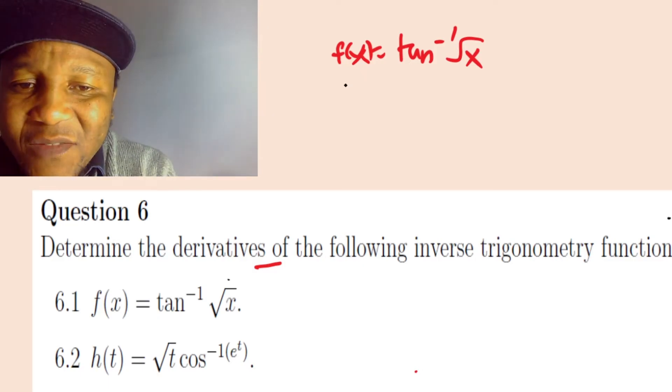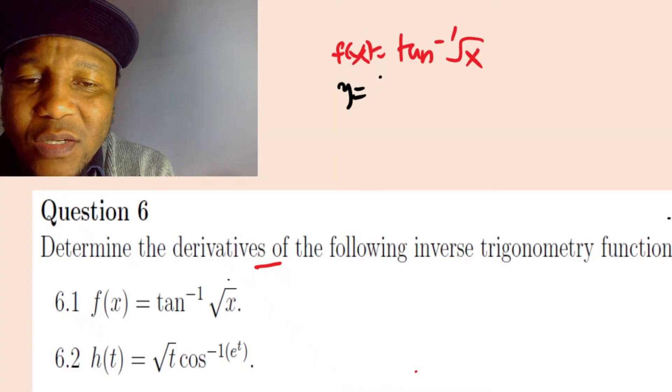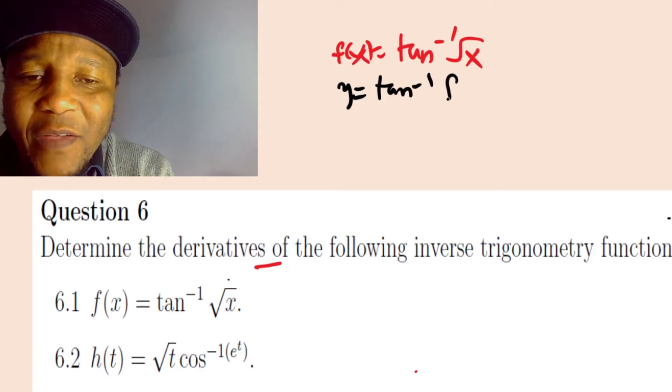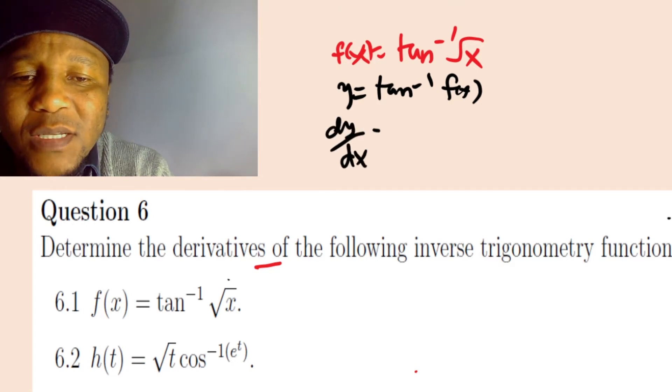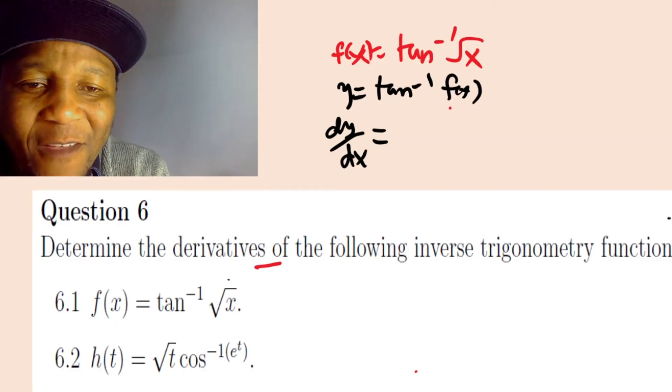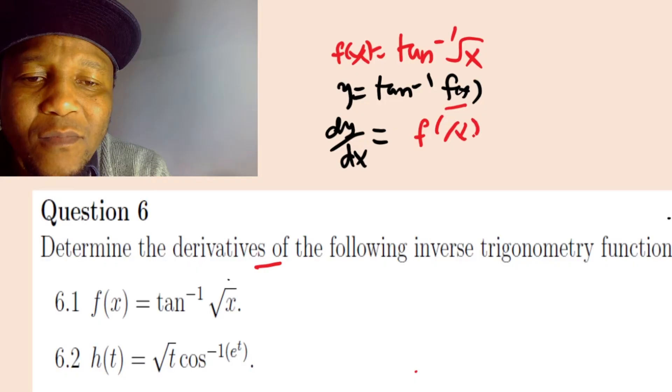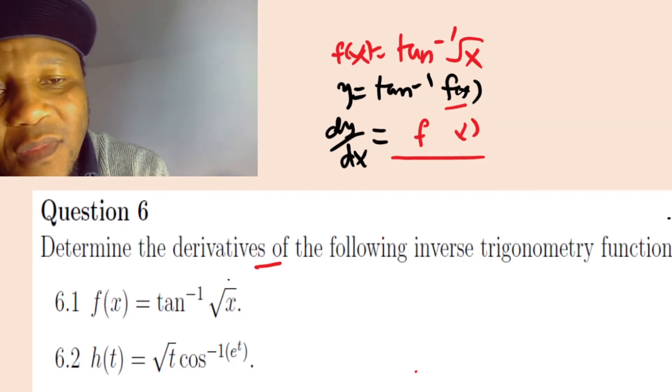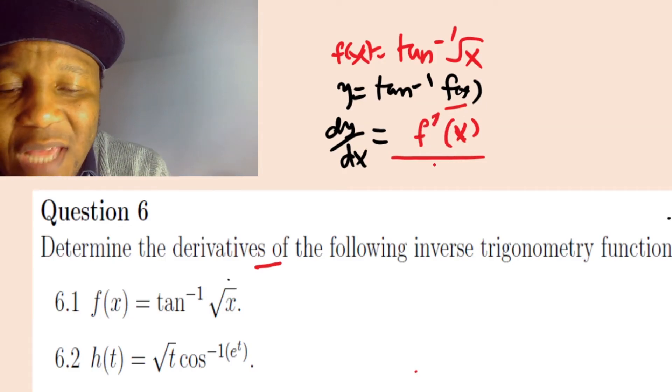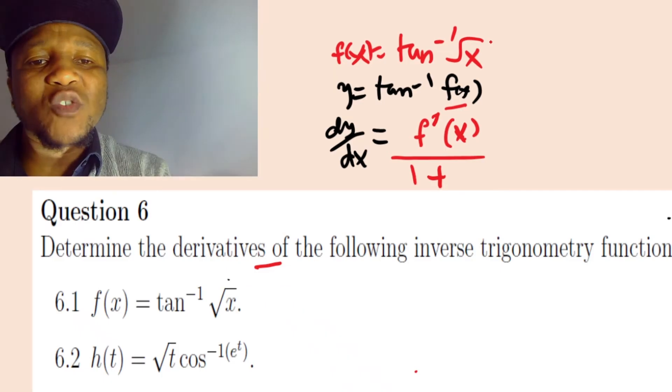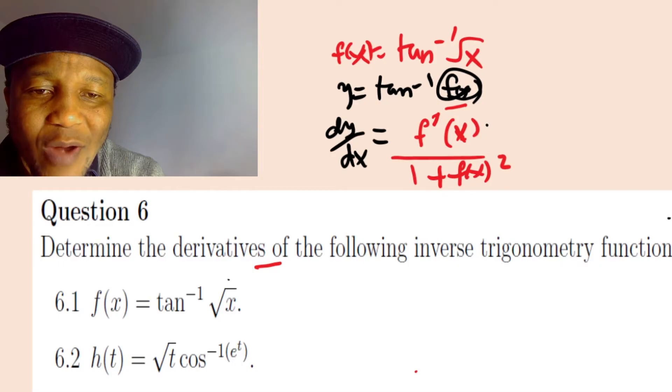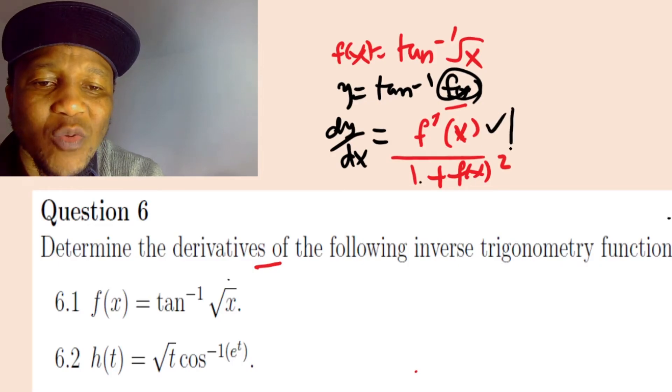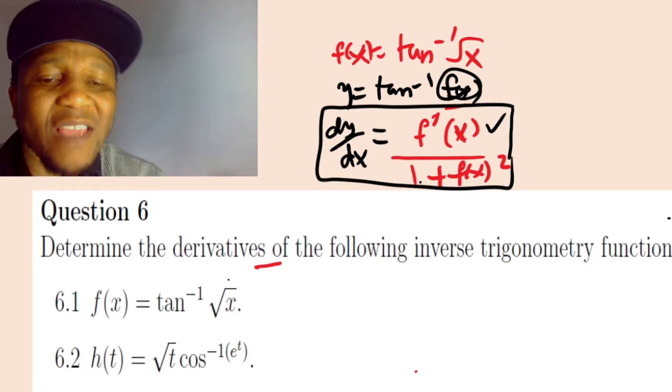If somebody gives you y equals tan inverse of f(x), then dy/dx equals f prime over 1 plus the square of that function. You find the derivative and write it on top. This is 1 plus the square of the function. This is how you find the inverse of tan for trigonometry.